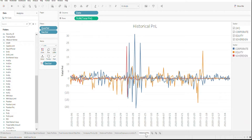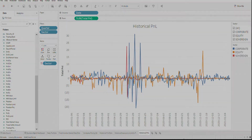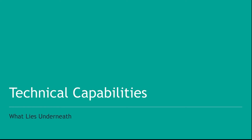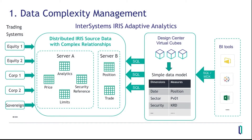Now that we have seen a visualized set of reports, let's look behind the scenes to see how InterSystems IRIS was used to create this demo. On the left side, we have a variety of trading systems: equities, corporates, sovereigns, and potentially many other systems. All that data is brought into InterSystems IRIS. The next part of the diagram shows how that data can be distributed across multiple InterSystems IRIS servers, providing a unified view of data across multiple systems. For example, you may have analytics, limits, price, and security reference information on one server, and position and trade info on a different server. But InterSystems IRIS provides a unified view of all that data.